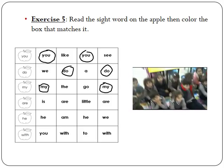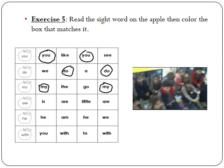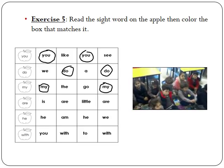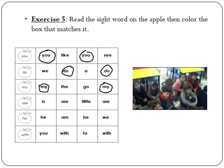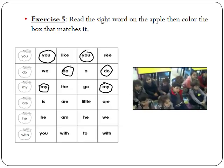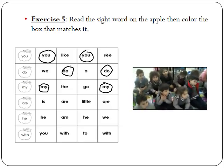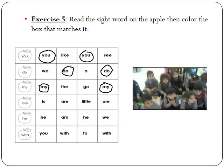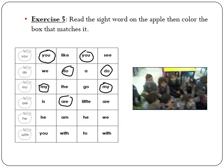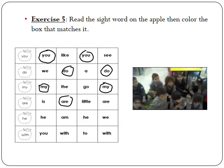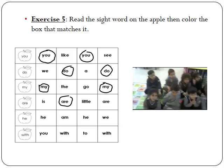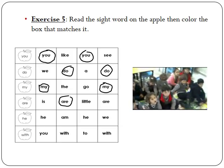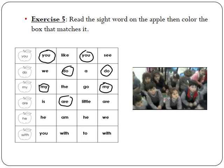Move to the fourth apple. What is this sight word? Is. What about this one? R. Should I circle R? Yes. What about this? Little. Thank you, Hashim. Should I circle little? No. R.